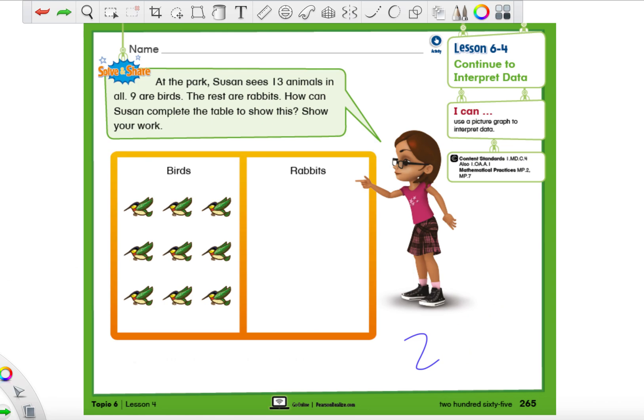So today we're on lesson 6-4 and we're still going to be interpreting data, but we're going to be doing it with a little bit of a twist. So instead of just comparing two numbers on a chart, today we're going to be able to complete a chart with just some information given to us. Now I'm going to show you guys two different ways that we can do this and I want you to pick the way that works best for you.